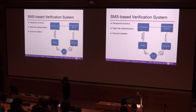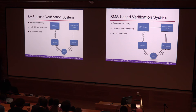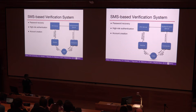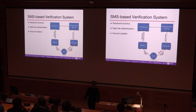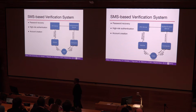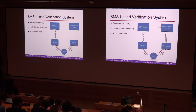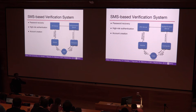That's one situation: the shared secret is lost and a second channel is used to recover it. Another situation is when the authentication process is uncertain — for example, the IP address has changed suddenly and the person is authenticating from an unfamiliar location. The system can then send an SMS verification code, assuming that attackers would have to compromise both channels.